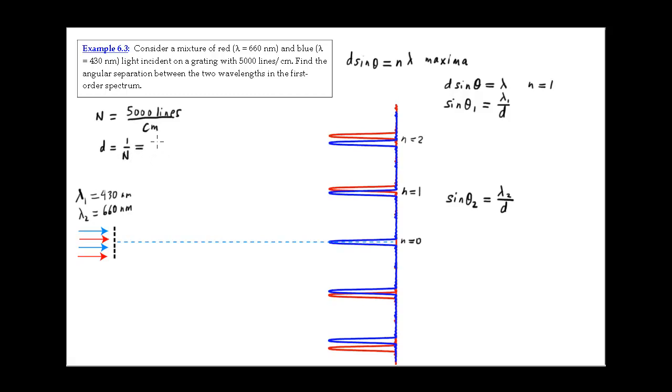And so what we get with that number is 2 times 10 to the minus 4 centimeters per line. And I won't put the per line there, I'll just mark it down as centimeters. But it does occur to me that since these wavelengths are given in nanometers, and those I'm going to convert to meters, that I probably want to express the separation between the slits in meters as well.